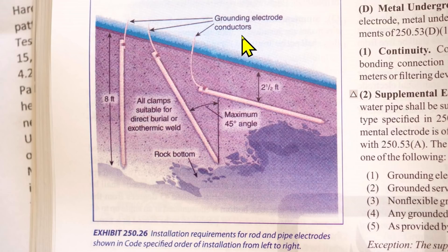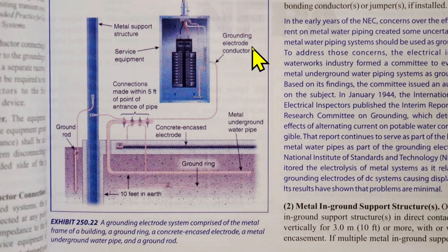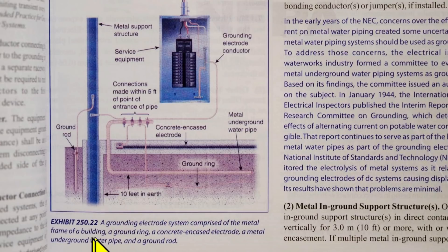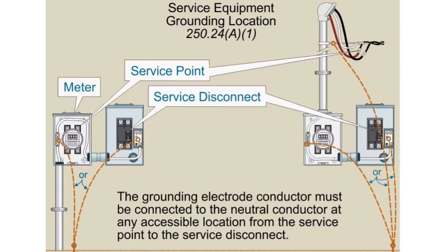So there's another example of a grounding electrode conductor. It says here installation requirements for rod and pipe electrodes. This is a good example of an electrode. Grounding electrode conductors — and here's another example. This is Exhibit 250.22 in the handbook. In this depiction, it says a grounding electrode system comprised of the metal frame of a building, a ground ring, a concrete encased electrode, a metal underground water pipe, and a ground rod — showing that you can have more than one type of grounding electrode. Terminating the GEC is covered in 250.24 A1.